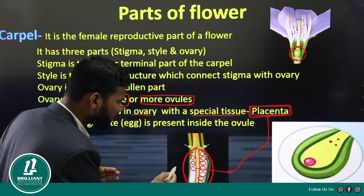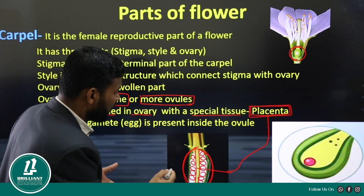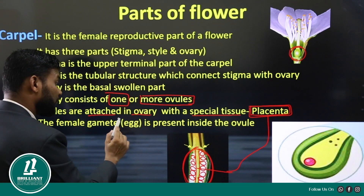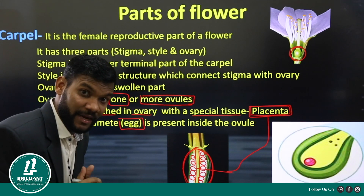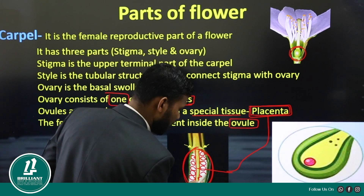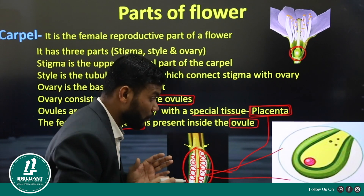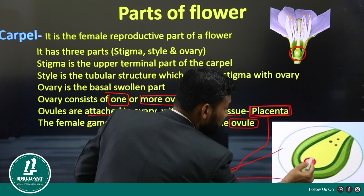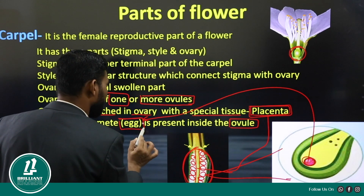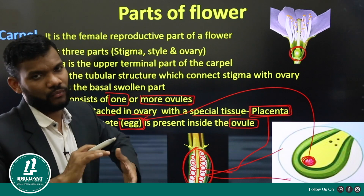Now let us see what is present inside each ovule. One important thing — the female gamete egg is present inside the ovule. You can see in the enlarged portion of one ovule: the female gamete egg is present inside the ovule.